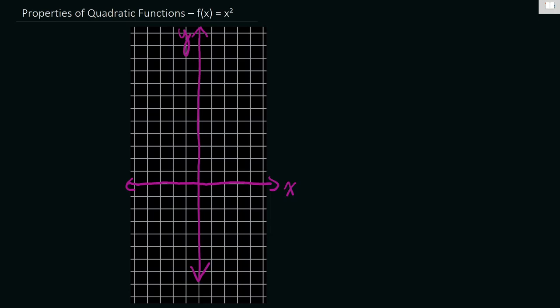So first of all a quick review. A function you can sort of think of as a black box that takes x values and outputs y values. In this case the function that we're looking at is f(x) = x². This is our basic quadratic function.